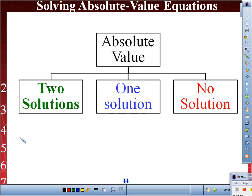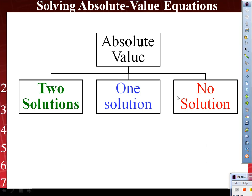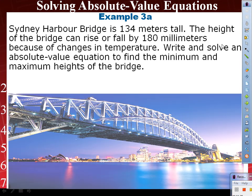So this is absolute value equal to a positive, absolute value equal to zero, and absolute value equal to a negative. But where I wanted to get to is this one. Copy that one, please, on your paper. Example 3A, you got one minute. It's going to go really fast. It says Sydney Harbor Bridge is 134 meters tall. The height of the bridge can rise or fall by 180 millimeters because of the change in temperature. Write and solve an absolute value equation to find the minimum and maximum height of the bridge. Copy that.